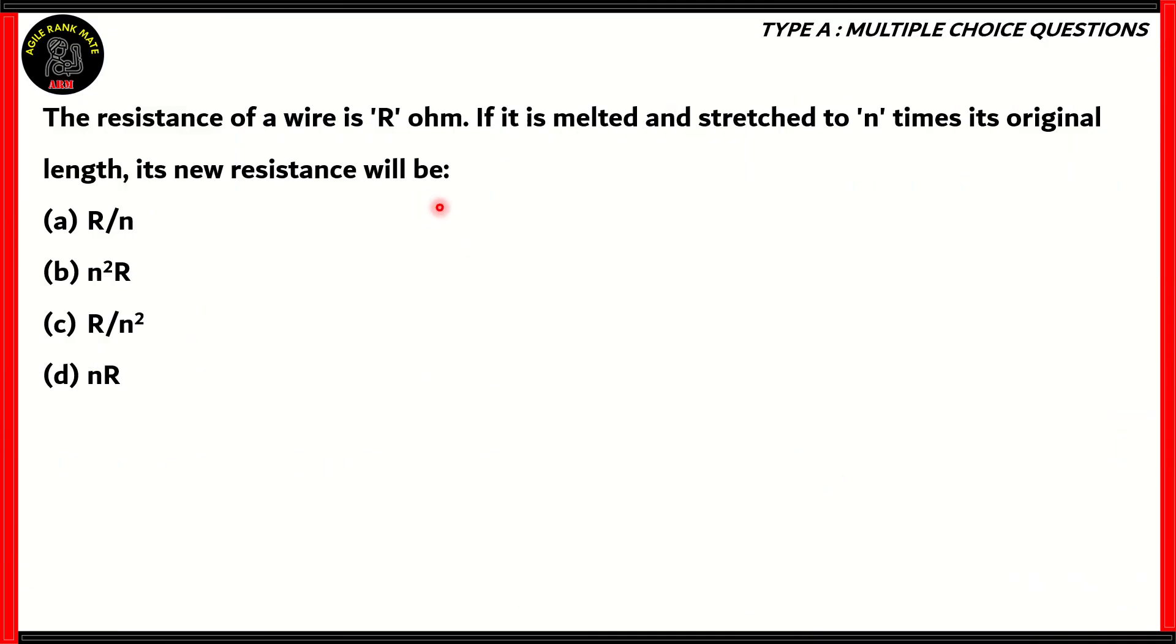Now, let's start off with this question. The resistance of a wire is R ohms. If it's melted and stretched to n times its original length, its new resistance will be: (a) R/n, (b) n²R, (c) R/n², (d) nR. So, how do we solve this question?